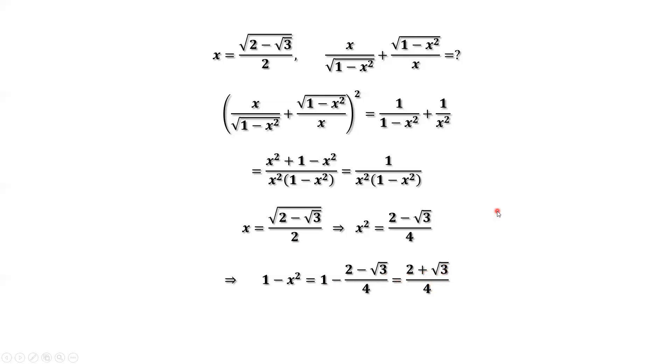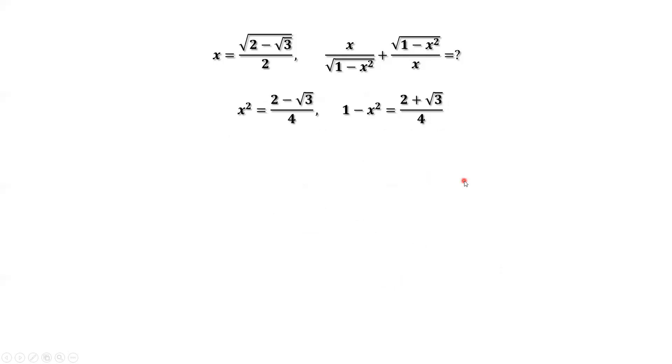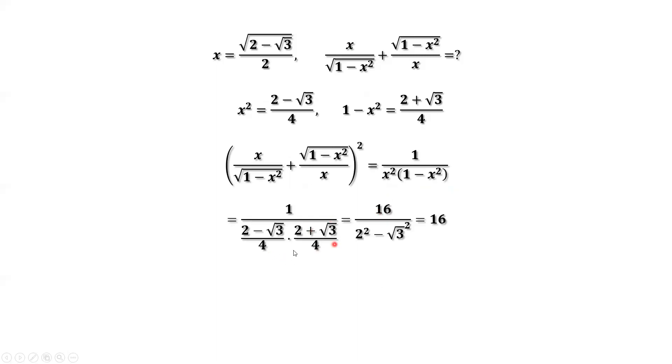Now we are ready to plug in the two numbers into this expression. Simplify this part. We have 16 over 2 squared minus square root of 3 squared, which is 16.